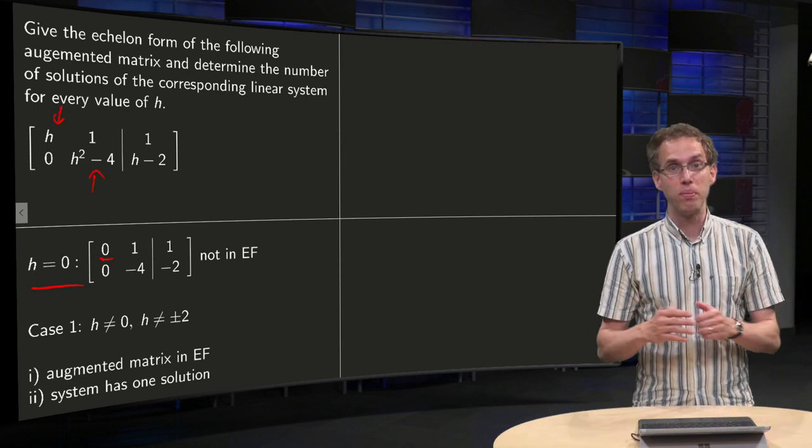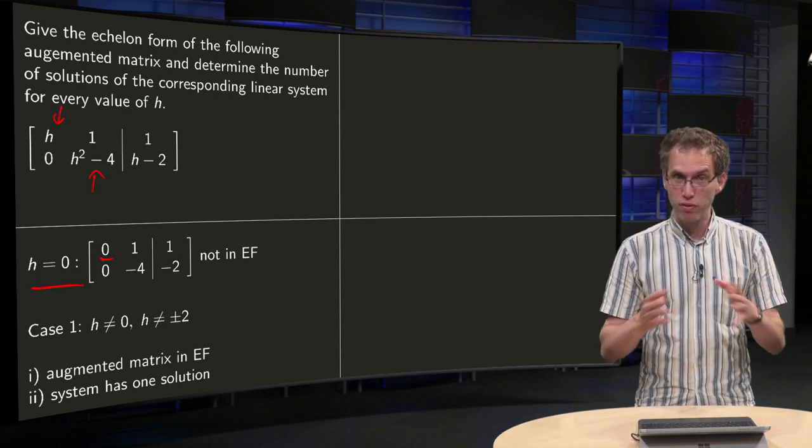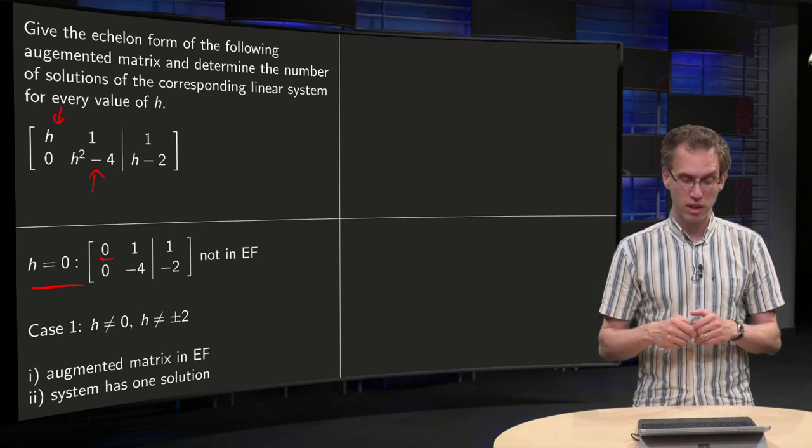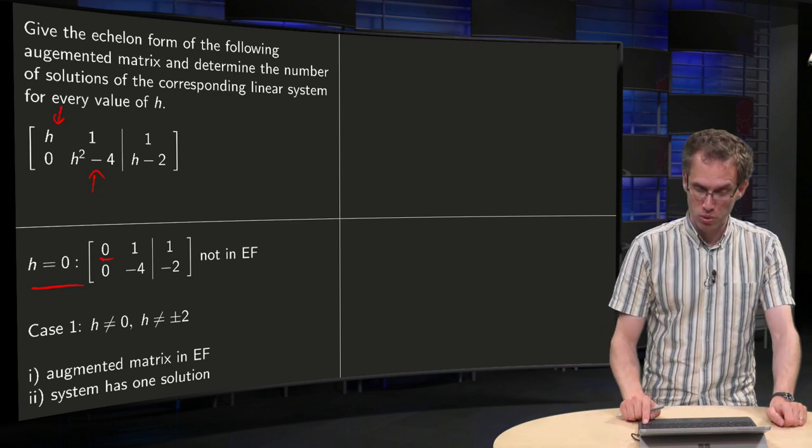In that case the augmented matrix is already in echelon form, we see we have no free variables, we also see that we have no inconsistent equations, so that means that our system will have one solution.